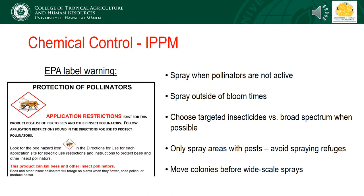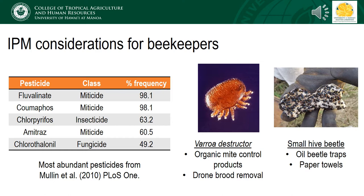In response to declining honey bees in the U.S., the Environmental Protection Agency developed a label to be put on certain pesticides that are particularly toxic to honey bees as an additional caution to applicators and farmers. Their guidelines include spraying when pollinators are not active and outside of bloom times, choosing targeted versus broad-spectrum insecticides whenever possible, only spraying areas that have the pests and avoiding spraying refuges where bees and other beneficial insects may be foraging, and moving colonies before an area-wide spray.